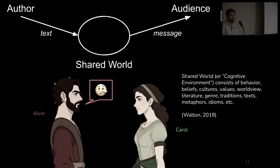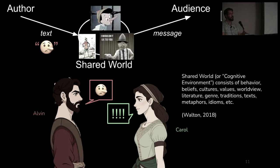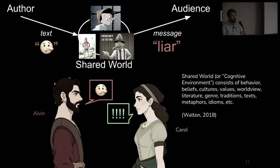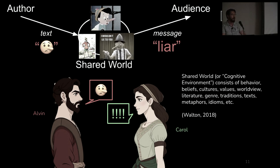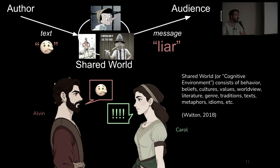So we have Alvin here. He texts Carol and says Pinocchio face, and she's offended. What's going on is that emoji is being fed through the shared world where we have this story of Pinocchio, and the message comes out as 'liar.' How difficult would that communication act be if you had never heard of Pinocchio? Imagine going back to the 1630s before the Pinocchio story was written and just showing some random Frenchman a picture of a guy with a long nose — it would be incoherent.